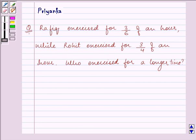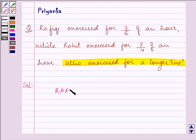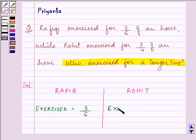In this question we need to find who exercised for a longer time. Let us start with our solution. Here we have Rafiq and we have Rohit. Rafiq exercised for 3 by 6 of an hour, and Rohit exercised 3 by 4 of an hour.